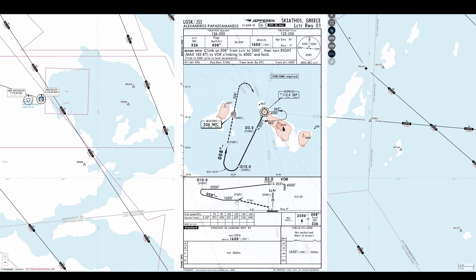From the 3 DME point to the 10 DME point, we'll descend from 4000 to 2000 feet, and also reduce speed to less than 185 knots because we want a stabilized, steep turn. While turning, we'll keep descending and hit 1600 feet before FQ01. We'll hold at 1600 feet until FQ01, then follow a 3-degree glide slope onto the runway. Even after I disable the autopilot, I'll try to follow the pink dots on our PFD to exactly follow this approach.